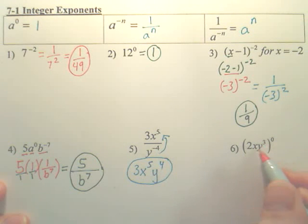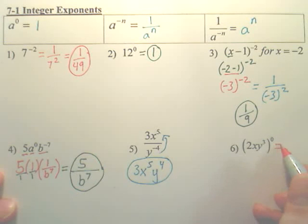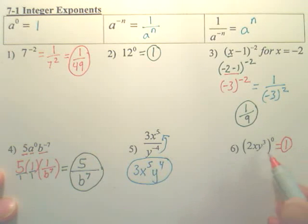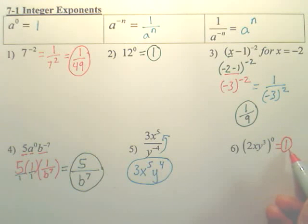And number 6 here is this whole thing to the 0. Well, kind of funny is this whole thing to the 0 doesn't matter what's inside of here. Because this parenthesis, this whole thing is going to be the 0 power. And what we said is anything to the 0 power is 1. So, dumb kind of question, but the answer is simply 1. Because this whole thing is to the 0 power, so it is 1.